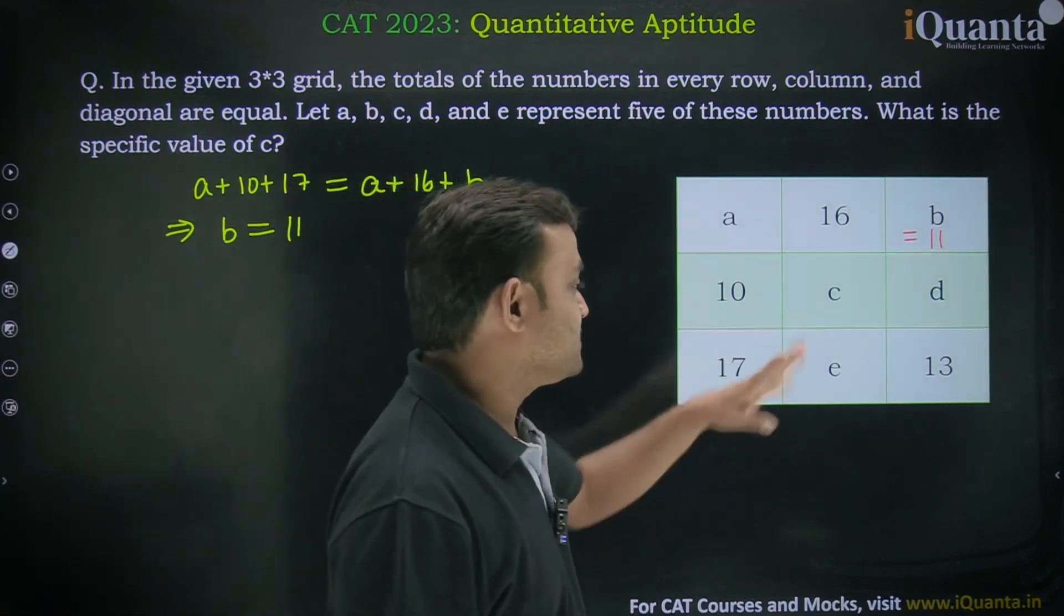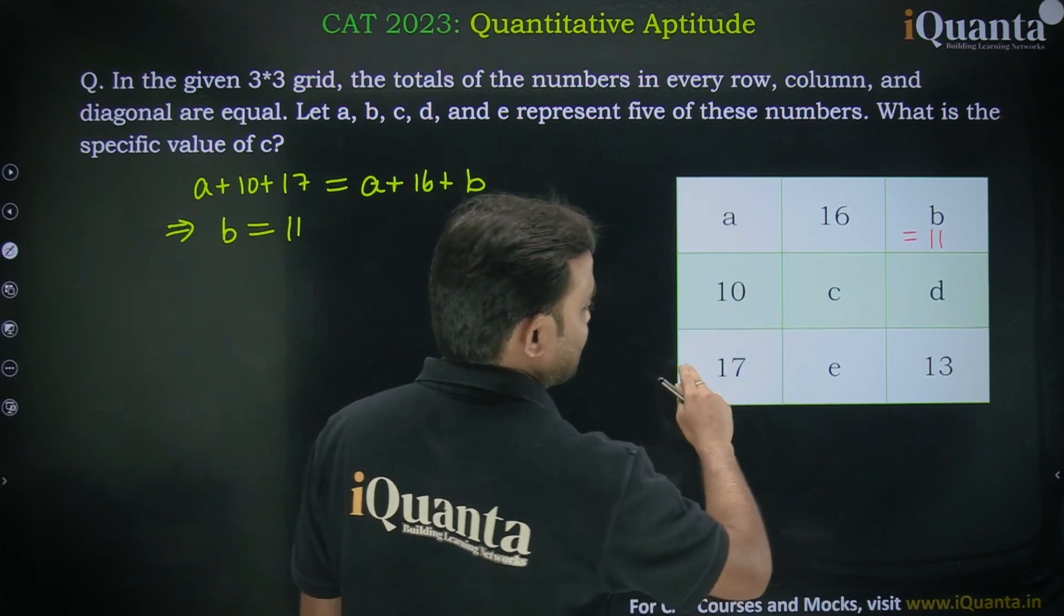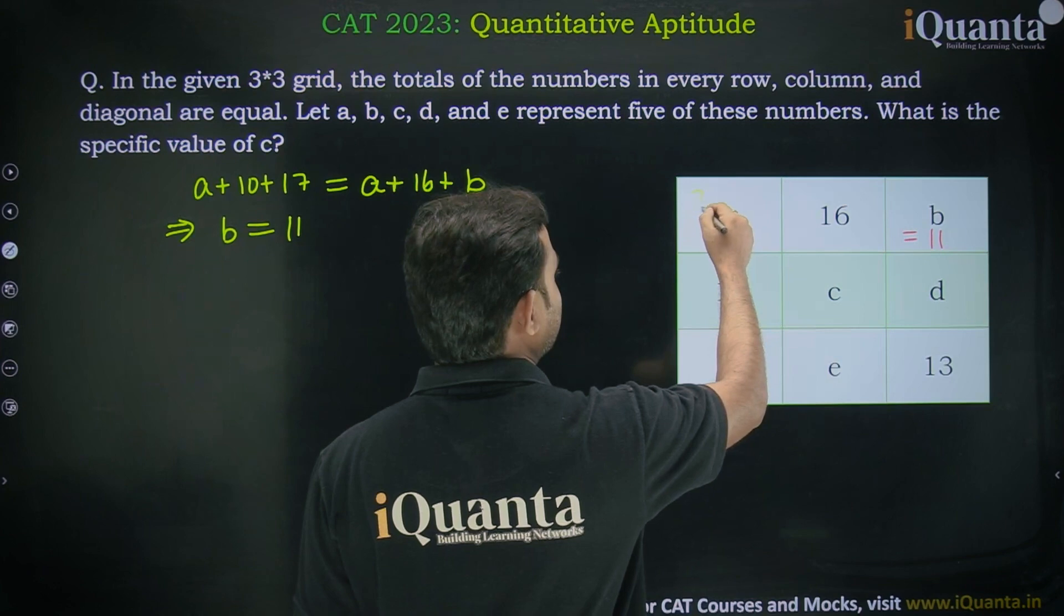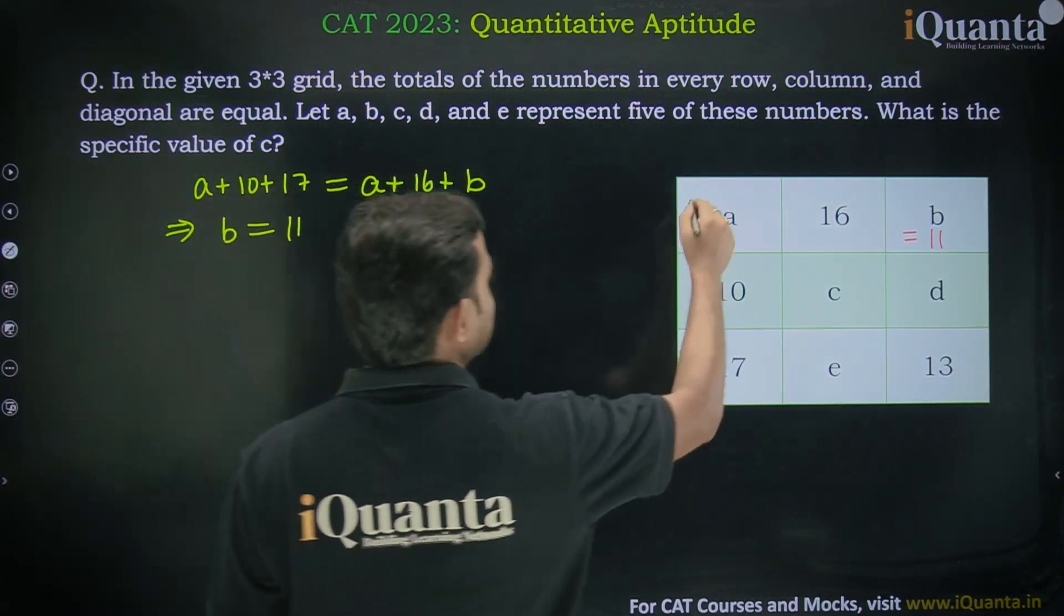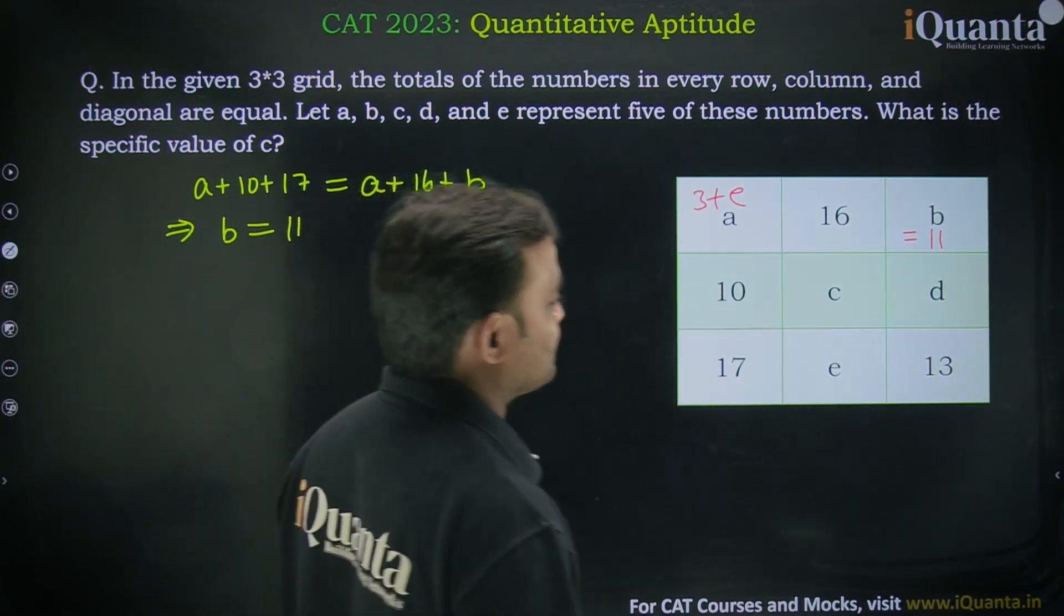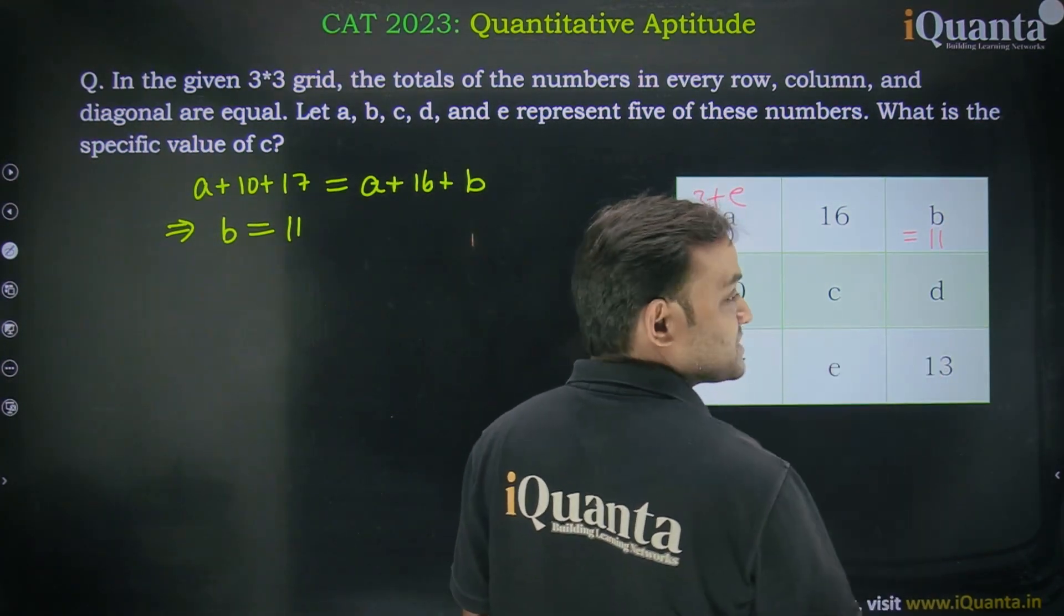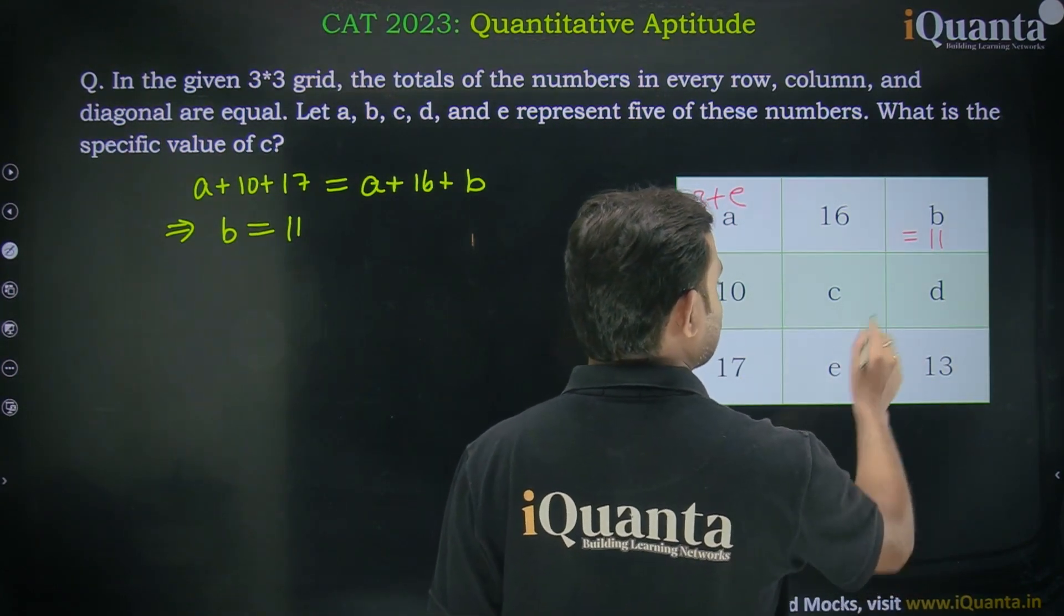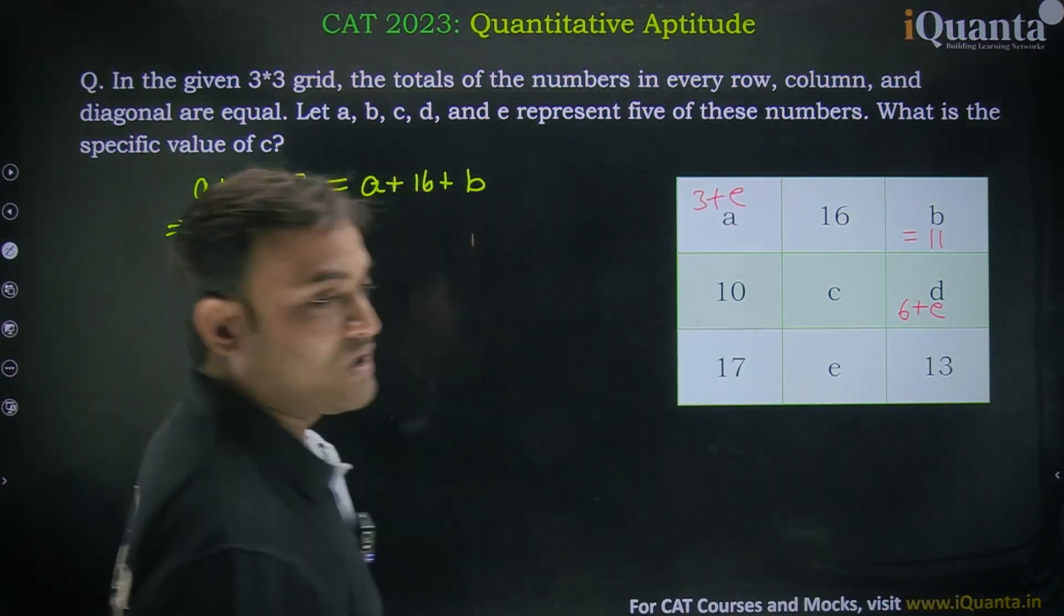We can start comparing variables. 27 + a = 30 + e, so a = 3 + e. Similarly, 11 + d + 13, which is 24 + d, equals 30 + e. Once again, d = 6 + e.